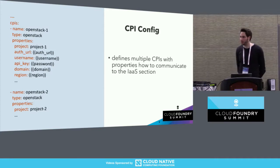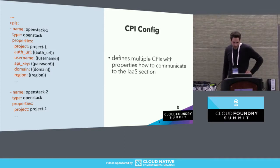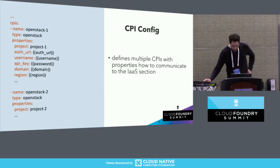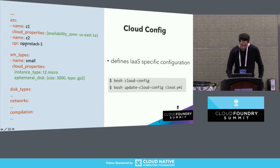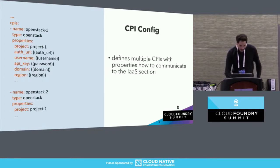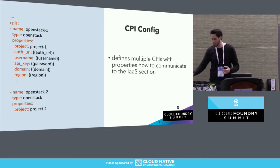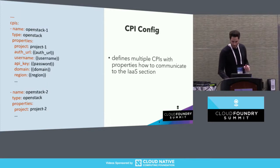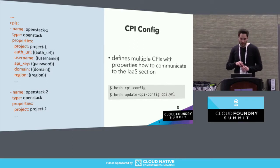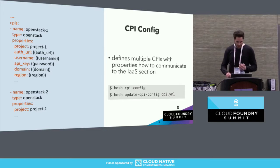At deploy time — when deploying the director with the BOSH create-env command — we use an ops file for a single CPI. At runtime, once the director VM is up, we can optionally upload a CPI config with further infrastructure sections. These infrastructure sections are then referenced from the cloud config's availability zone section. Here a CPI called OpenStack1 is referenced from the cloud config AZ section — Z2 references the CPI OpenStack1, passing properties for how to communicate and authenticate to the infrastructure. This is a powerful concept enabling instances from one deployment to run on multiple infrastructures.